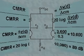Common mode rejection ratio, or CMRR, is found by using the ratio of the differential voltage gain, ΔVd, to the common mode gain, ΔCM. Thus, CMRR is equal to ΔVd divided by ΔCM. The higher the CMRR, the better. The CMRR is often expressed in decibels as 20 log of ΔVd divided by ΔCM.